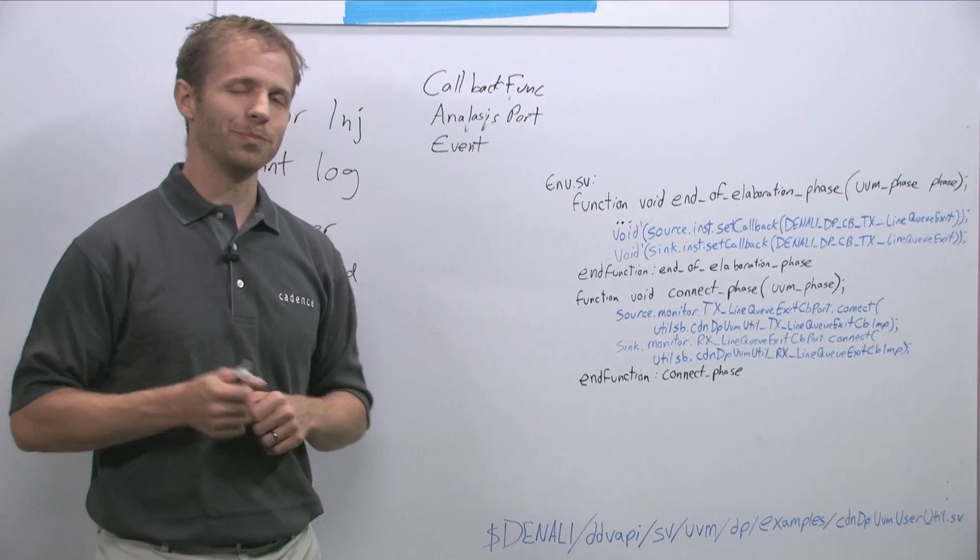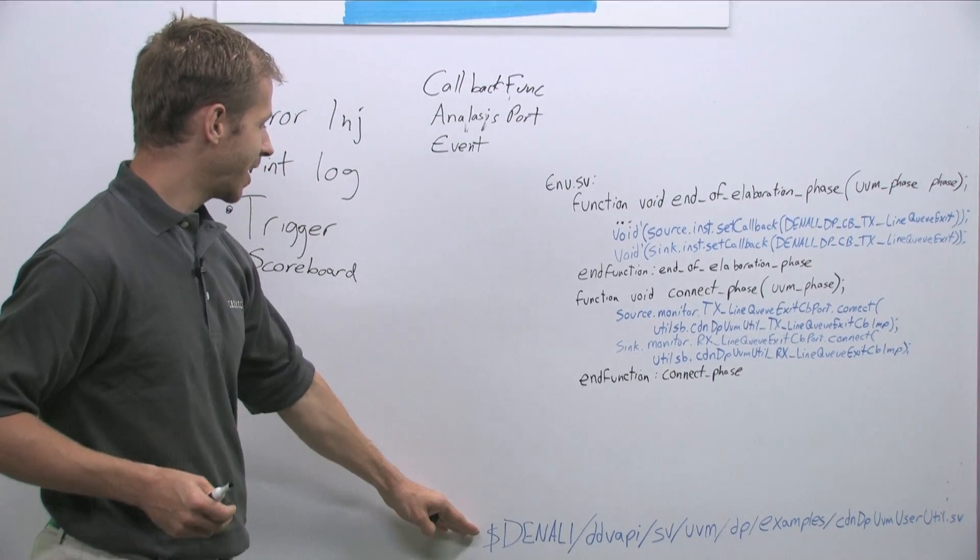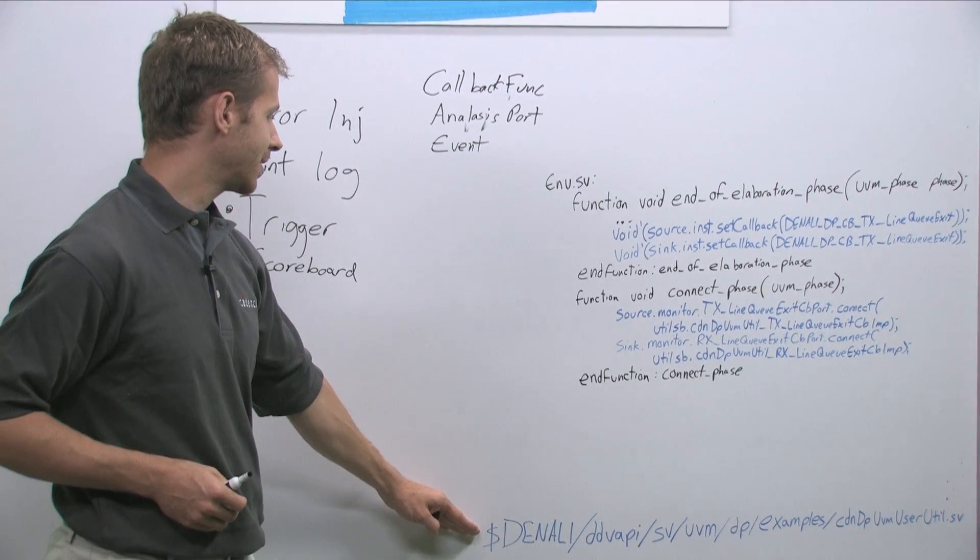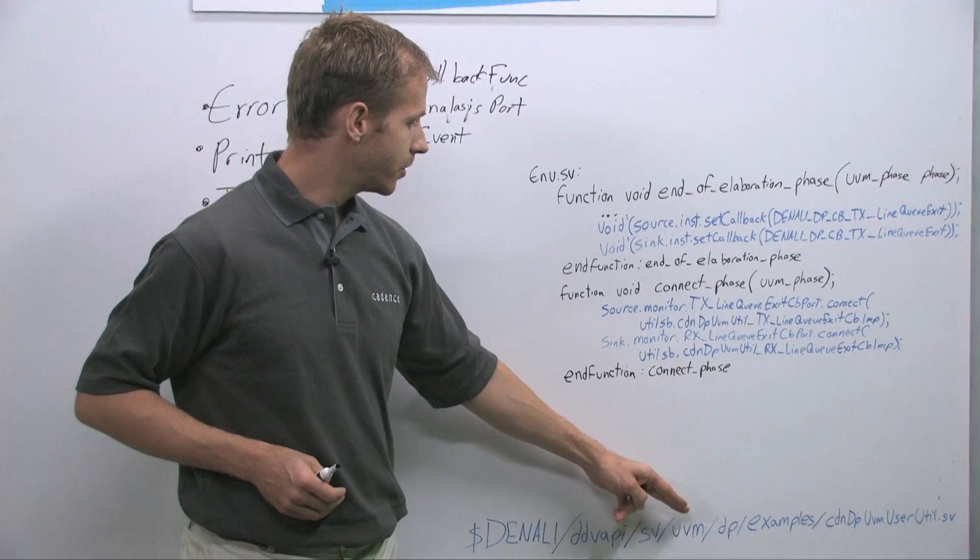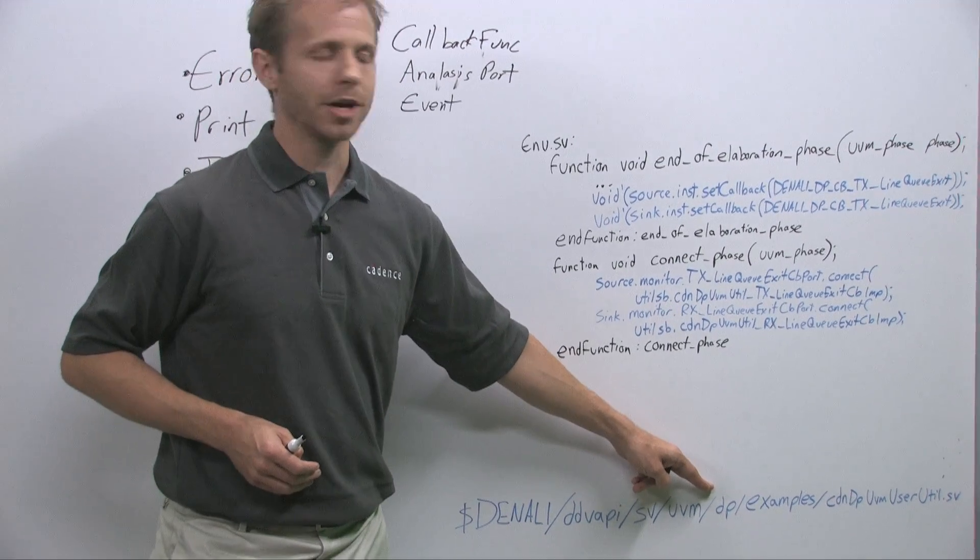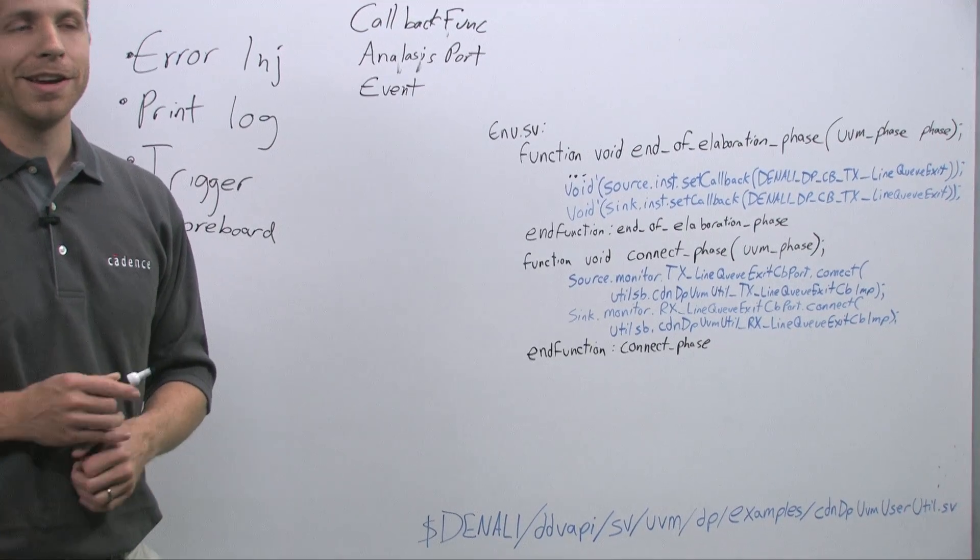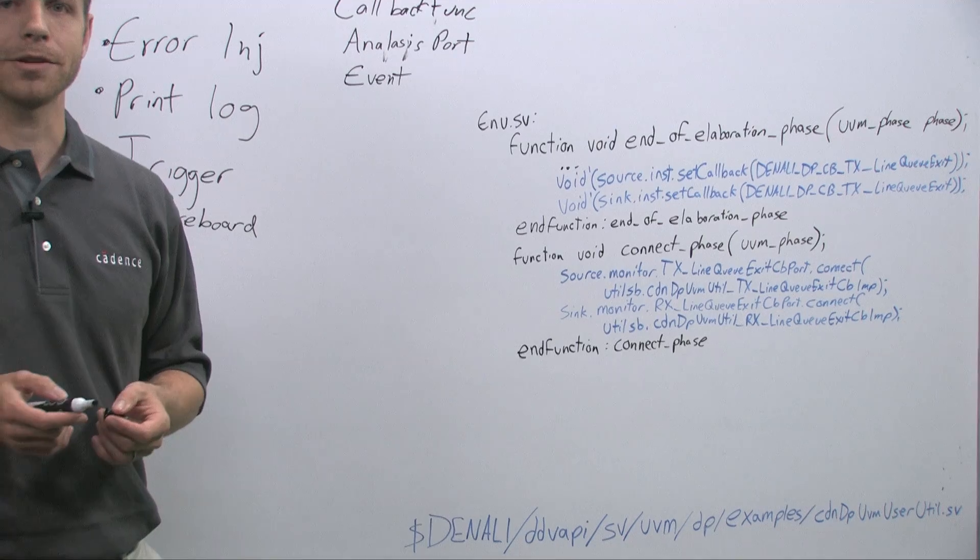To save some time myself writing, I write pretty slow and yourself typing, we actually have an example already available here at Denali DDV API, System Verilog UVM DisplayPort. So in the DisplayPort examples area there is a util.sv file that has a scoreboard that's all ready to use and modify and use in other agents.